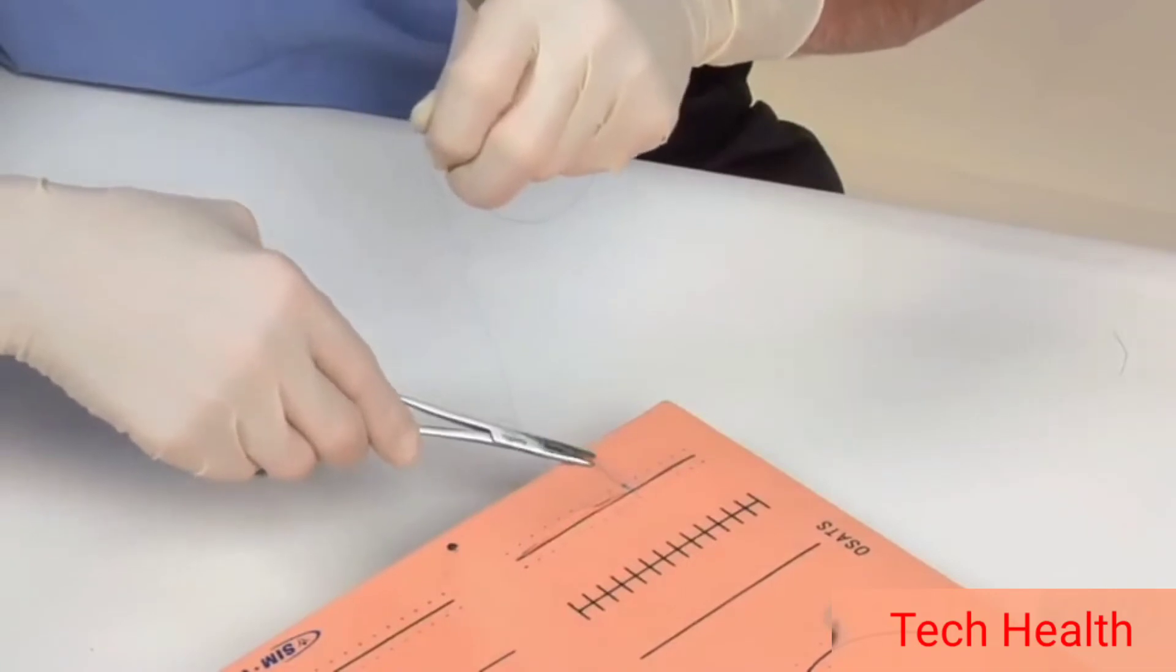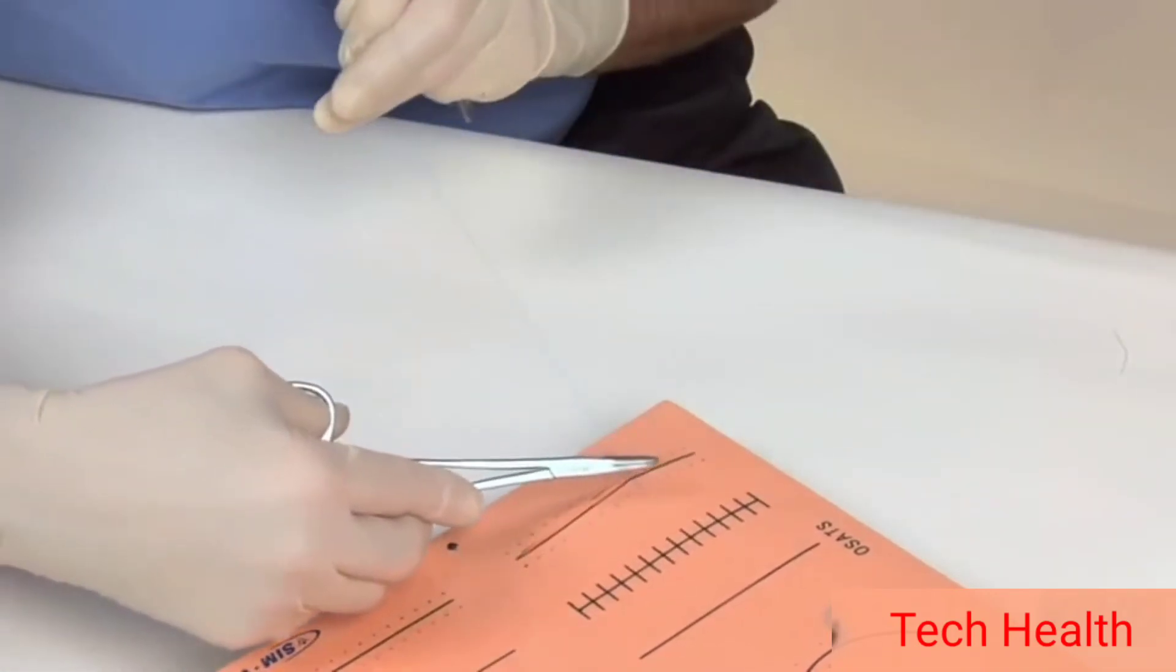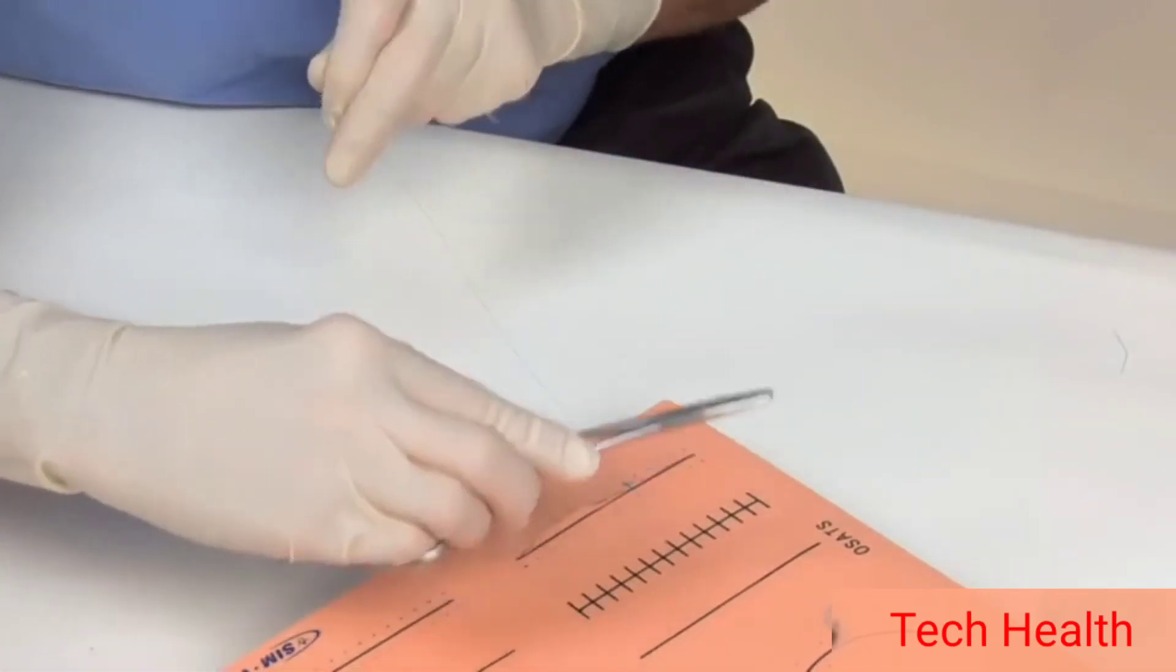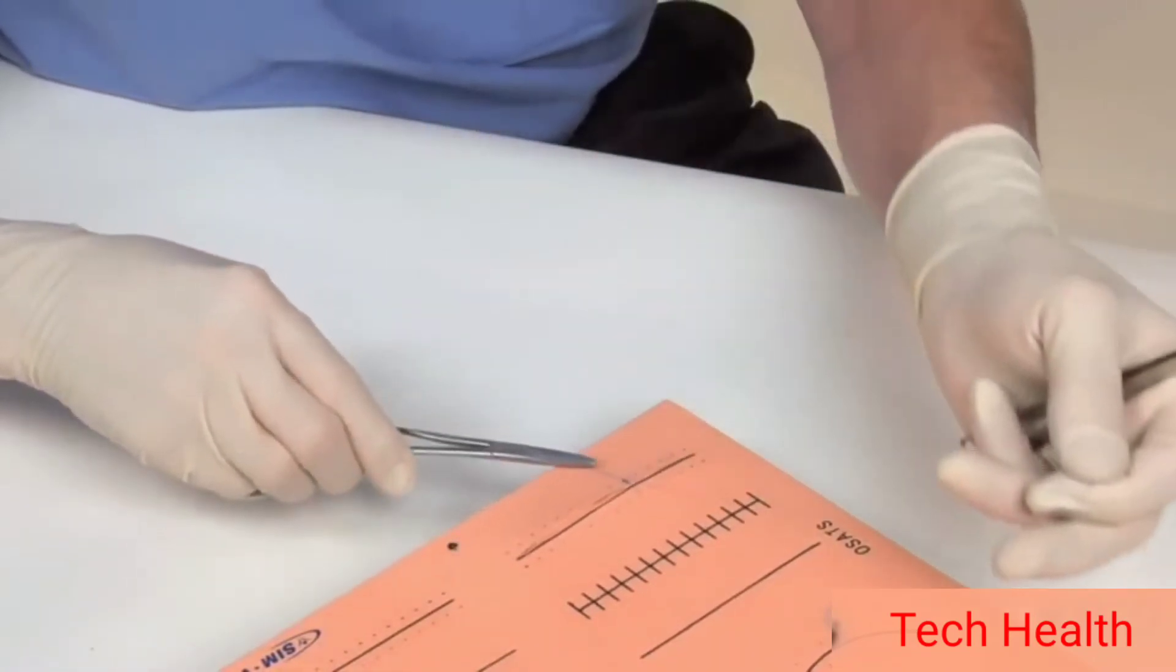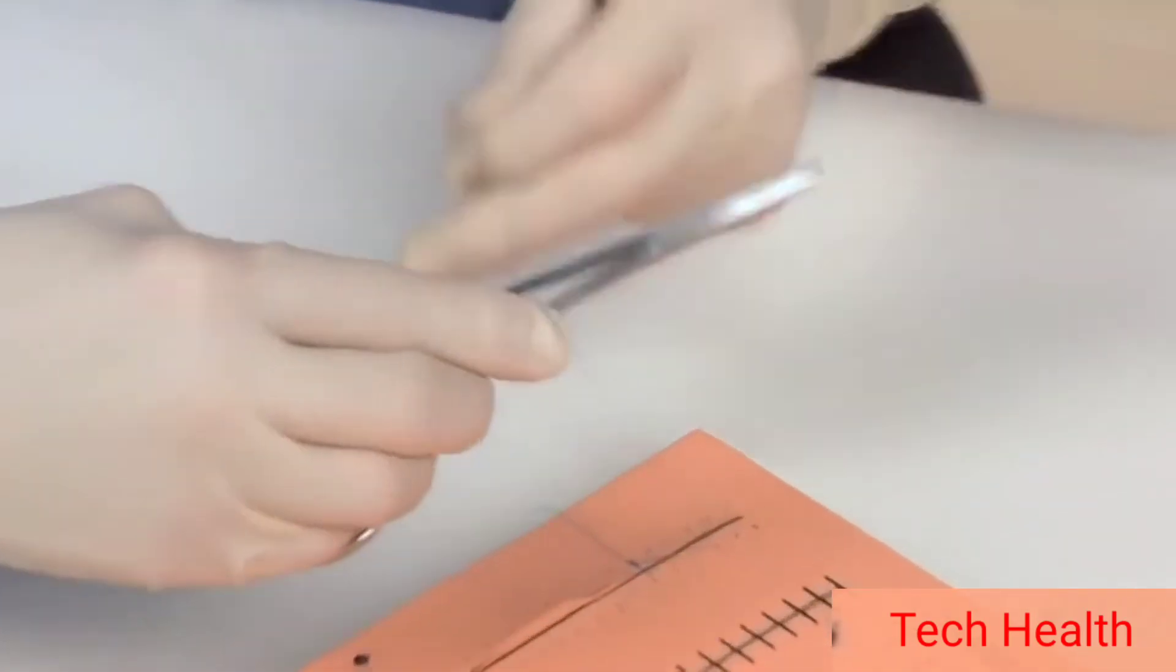Start towards you. Move away from you into the long suture. Start away from you. Start towards you. And after six throws, you will have completed the knot.